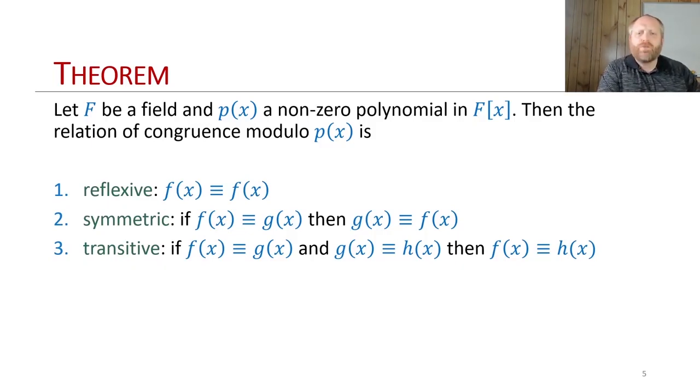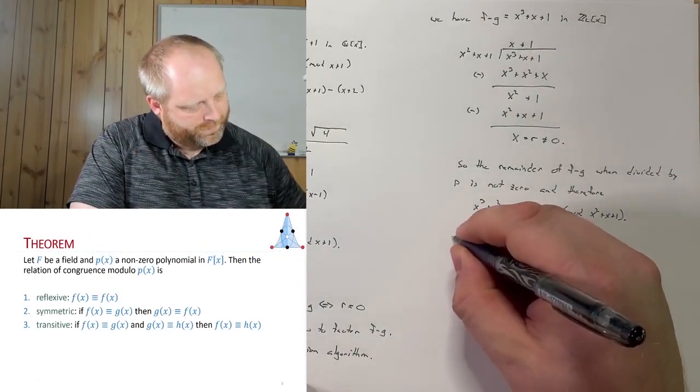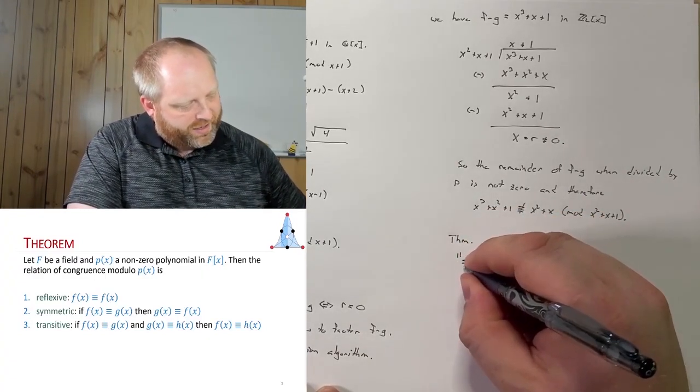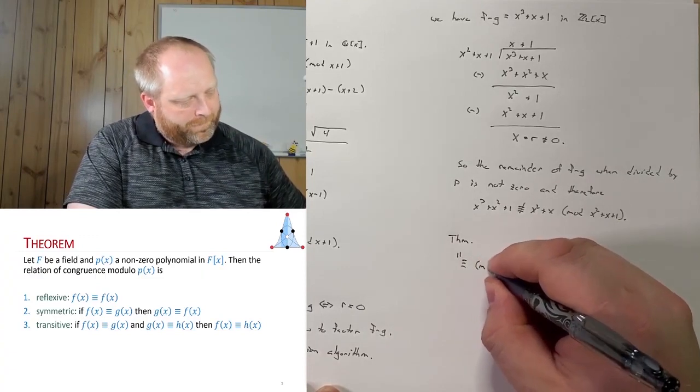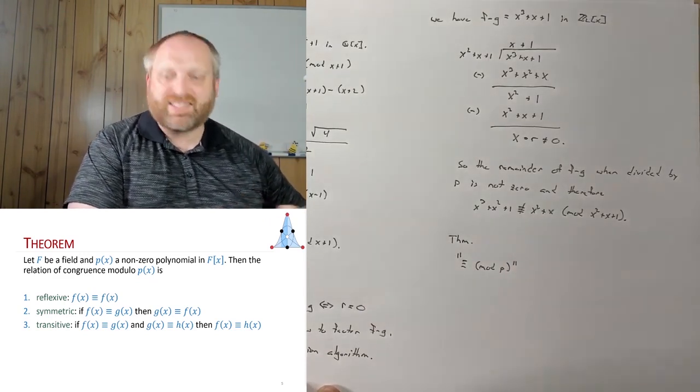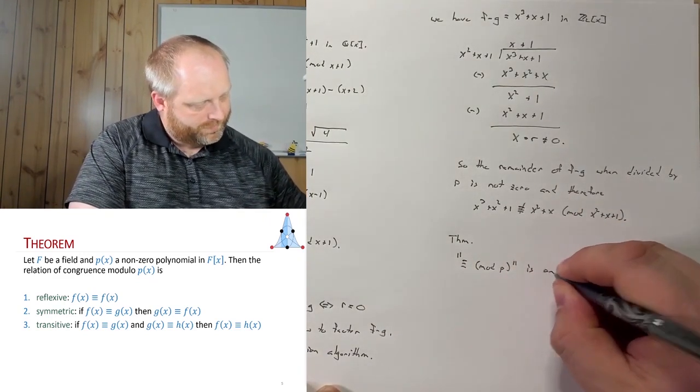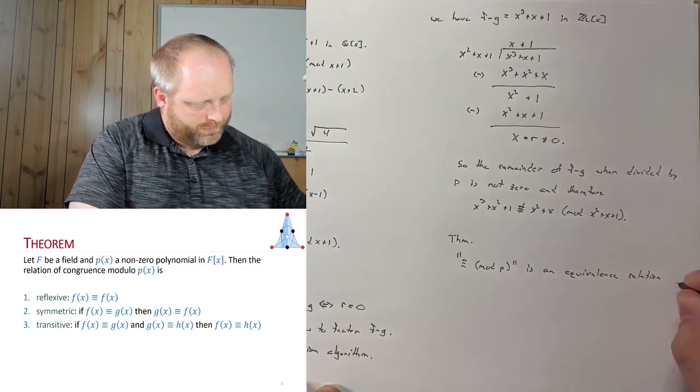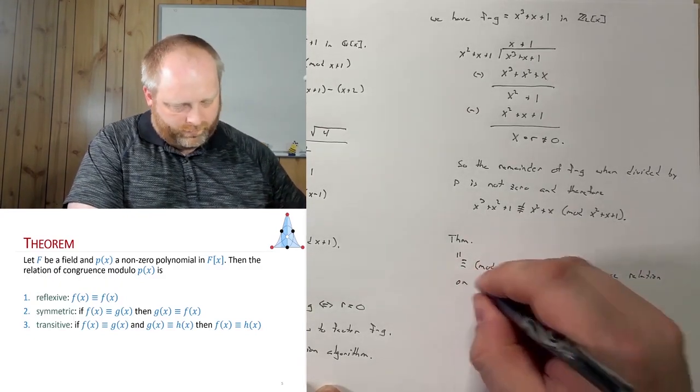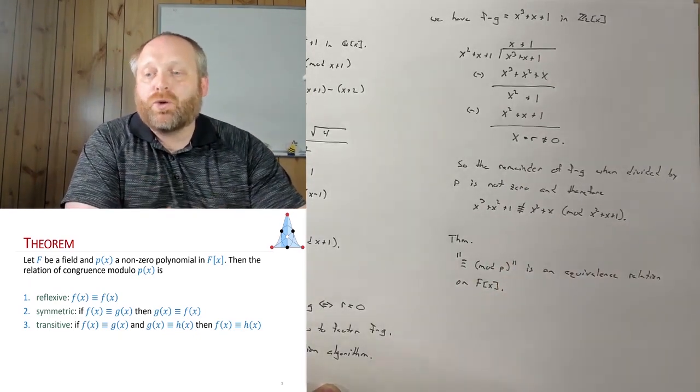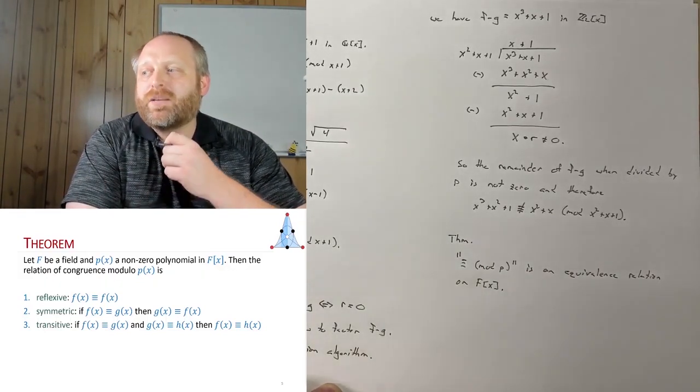So let's quickly show this, because this is not an overly difficult one to show. So just a quick reminder here that the congruence modulo p is an equivalence relationship on F[x]. So we need to show each three of the properties: reflexive, symmetric, and transitive.